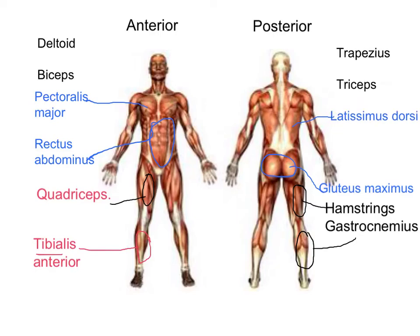Moving further up the body, on the front of the upper arm we've got the bicep muscles, and in the shoulder we have the deltoid muscle. From the anterior side you can see the deltoids there as well, but we're also looking at the tricep muscles on the back of the arm, and the trapezius which goes up into the neck and across and down.